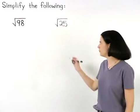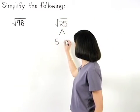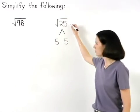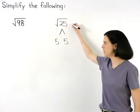Since 25 factors as 5 times 5, the square root of 25 is 5.